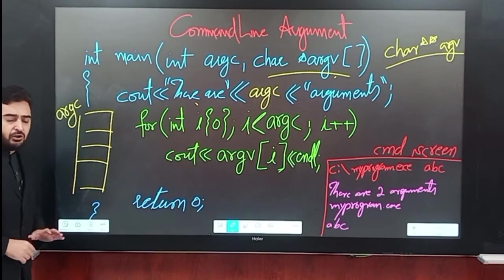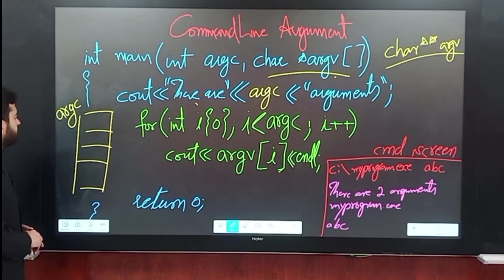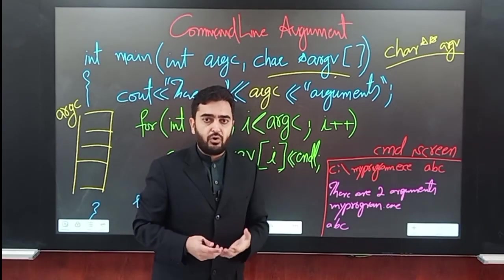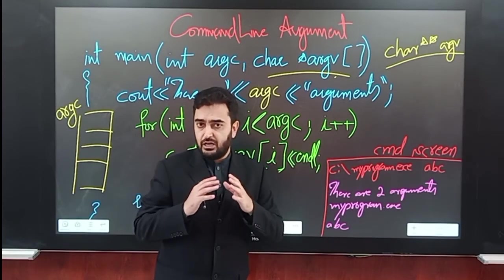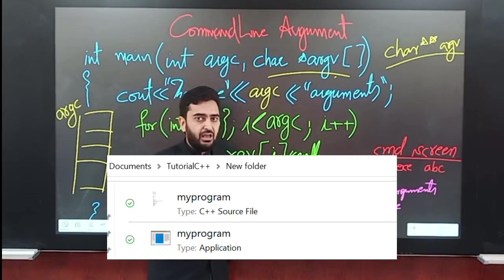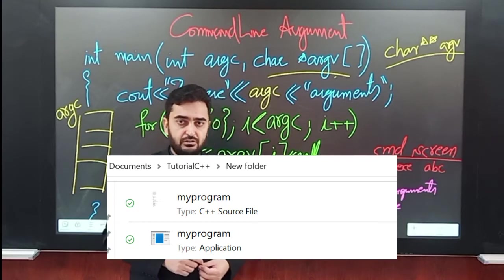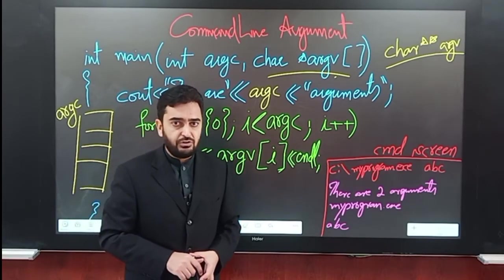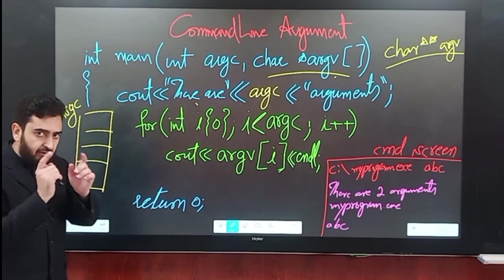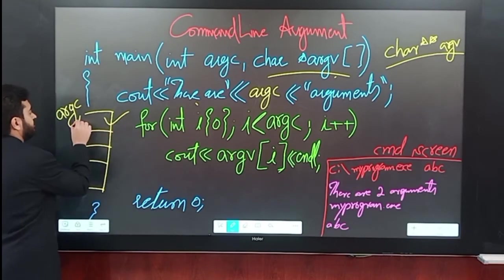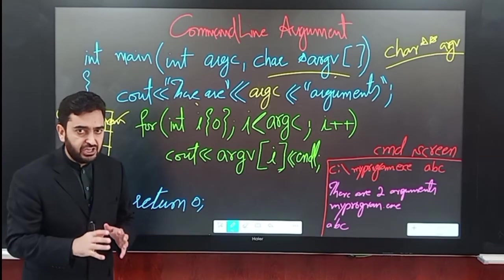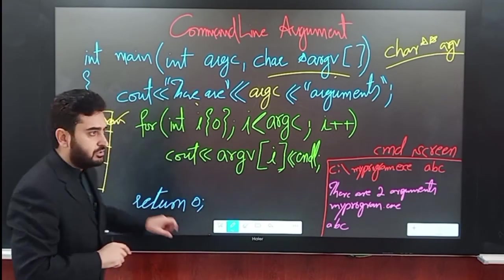The first value of this array will always be the name of your program file. For example, if the code is saved in a file named my_program.cpp, when you compile it, that cpp file is translated into an executable file named my_program.exe. That executable file can be run in the command window, and its name will always be saved in the first location of the argv array — argv[0].